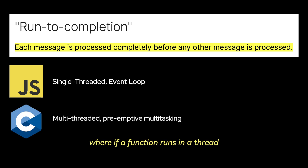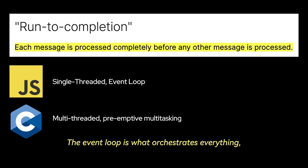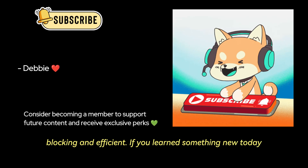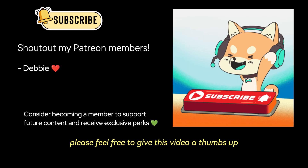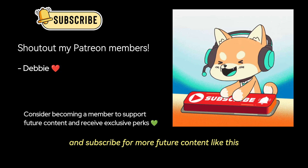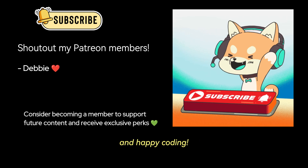This differs from C, where if a function runs in a thread, it may be stopped at any point by the runtime system to run some other code in another thread. The event loop is what orchestrates everything and ensures JavaScript remains non-blocking and efficient. If you learned something new today, please give this video a thumbs up and subscribe for more content like this. Thank you very much for watching, and happy coding!